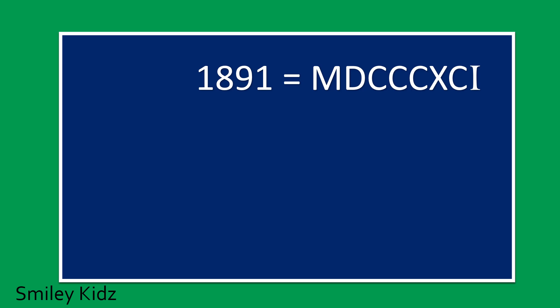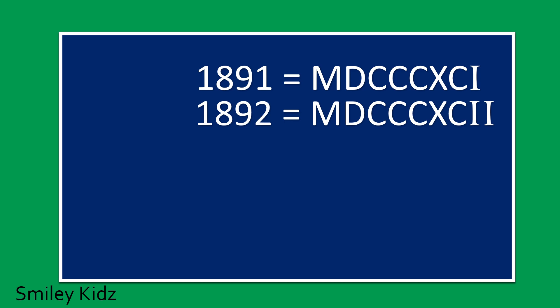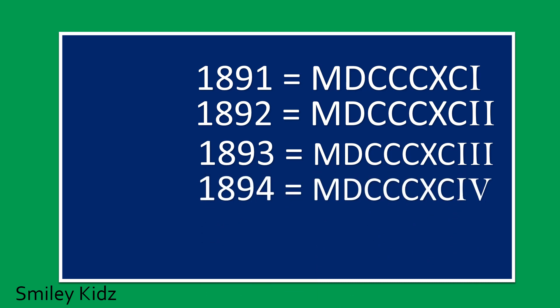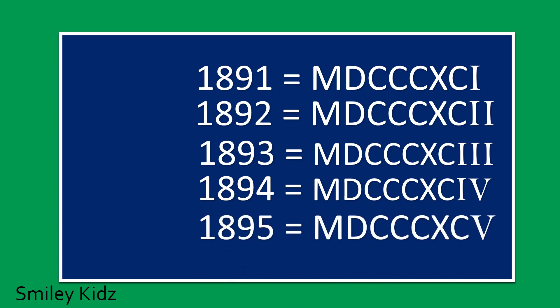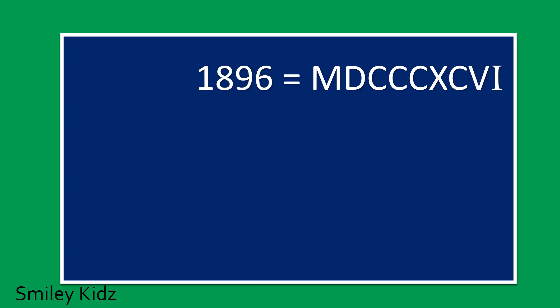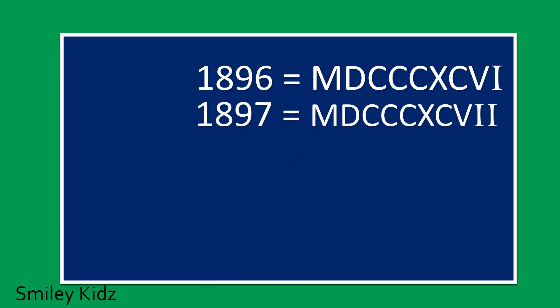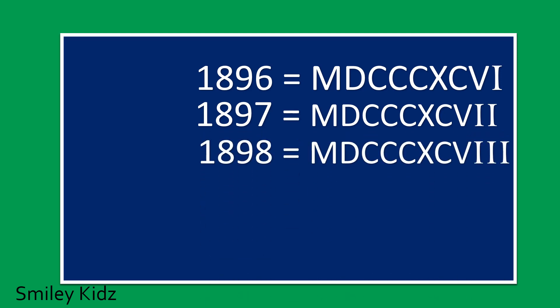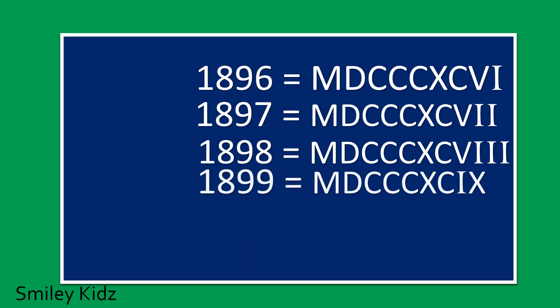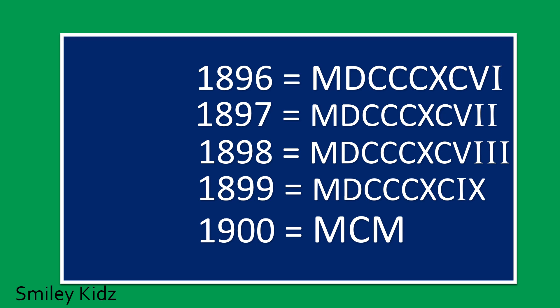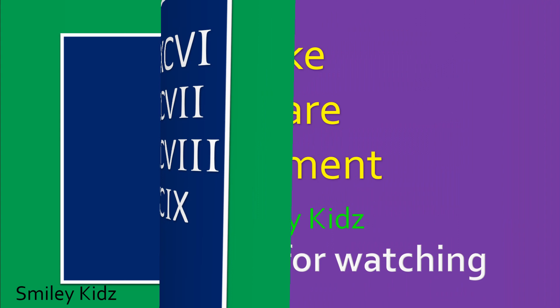1891 MDCCCXCI. 1892 MDCCCXCII. 1893 MDCCCXCIII. 1894 MDCCCXCIV. 1895 MDCCCXCV. 1896 MDCCCXCVI. 1897 MDCCCXCVII. 1898 MDCCCXCVIII. 1899 MDCCCXCIX. 1900 MCM.